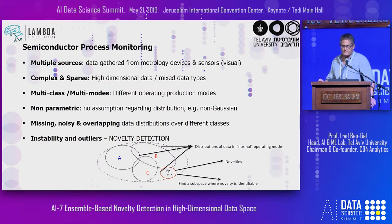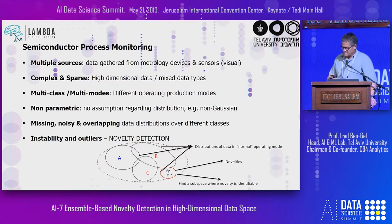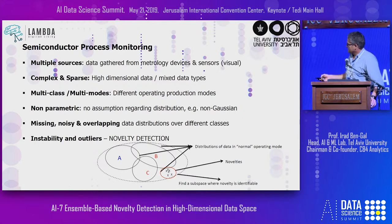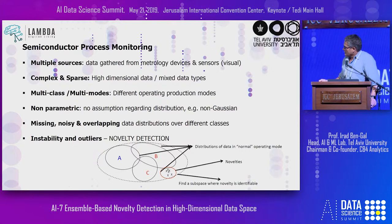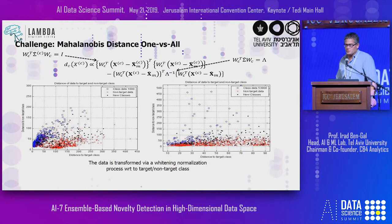You can talk about the fact that it's high-dimensional data that is sparse, multi-modal, different operating modes, some products rerouted back to the machines. It's non-parametric - you cannot assume a nice mixture of Gaussian models and have it work. There is a lot of missing, noisy, and overlapping data. In this environment, what we're looking for are those novelties: you have classes A, B, and C as known classes, and suddenly there is a new class hidden somewhere in the space that you need to find.